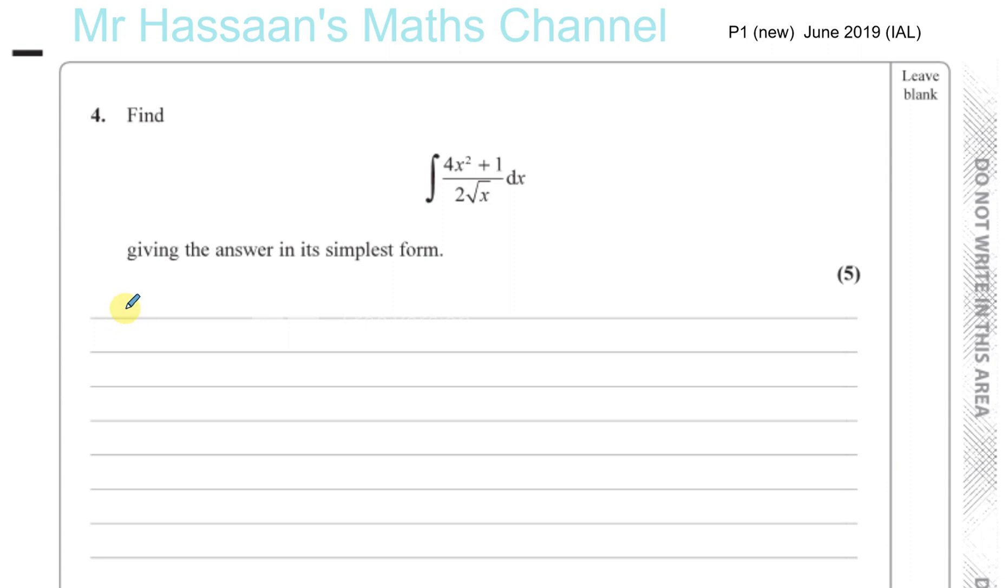So let's just start off by separating the terms into two separate terms. We have the integral of, I'm going to write this as 4x squared over 2 times root x. Now root x is the same as x to the power of half. So 4x squared over 2x to the power of half,